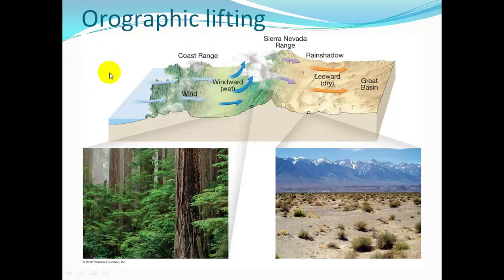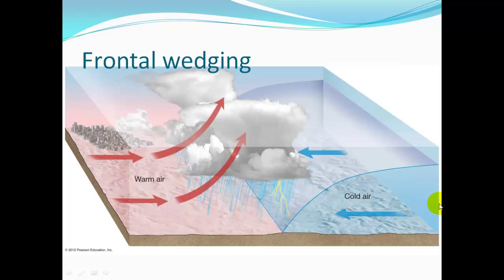In orographic lifting, winds coming off the ocean reach tall mountains and the air is lifted up. It cools at the dry adiabatic rate, then the wet adiabatic rate, forming clouds, and at some point it starts precipitating. Most moisture drops out on the windward side. When air crosses over the mountains and descends, it warms at the dry adiabatic rate. All precipitation falls on one side of the mountains; the other side is a rain shadow desert. In frontal wedging, a cold front lifts warm air — as it cools to dew point, it forms clouds and precipitation.